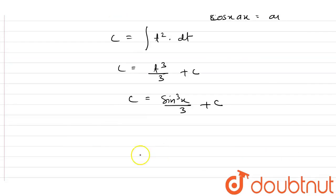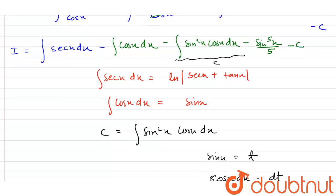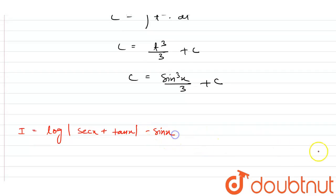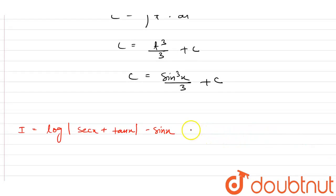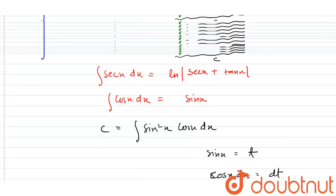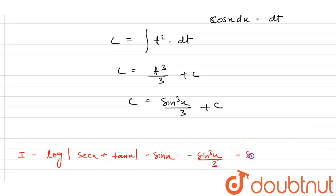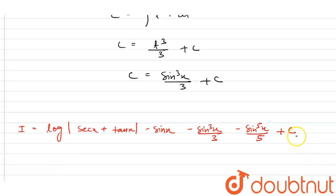Combining all terms: I equals the integral of sec x dx, giving log|sec x + tan x|, minus the integral of cos x dx, giving sin x, minus C which equals sin³x divided by 3, minus sin⁵x divided by 5 plus C. Therefore the final answer is I equals log|sec x + tan x| − sin x − sin³x/3 − sin⁵x/5 + C.